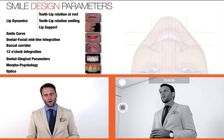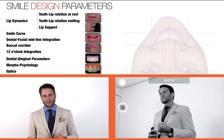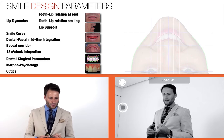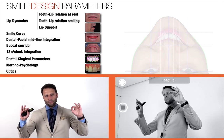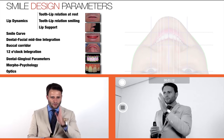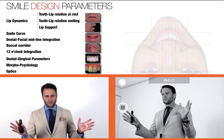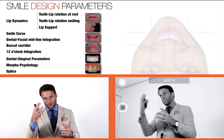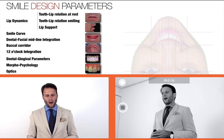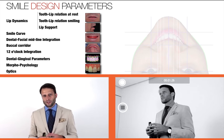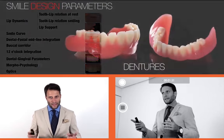There are several subtopics here that we need to control and understand: lip dynamics, relation with the lips at rest and smiling, lip support, the smile curve, the dental-facial midline integration, the dental midline and the facial midline, buccal corridor aspect, the 12 o'clock buccal volume integration and lip support, and dental-gingival parameters — more for psychology and the optical effects of the teeth and gum.